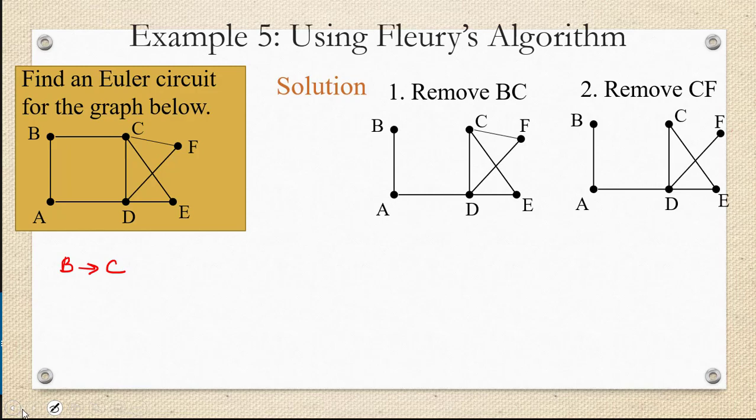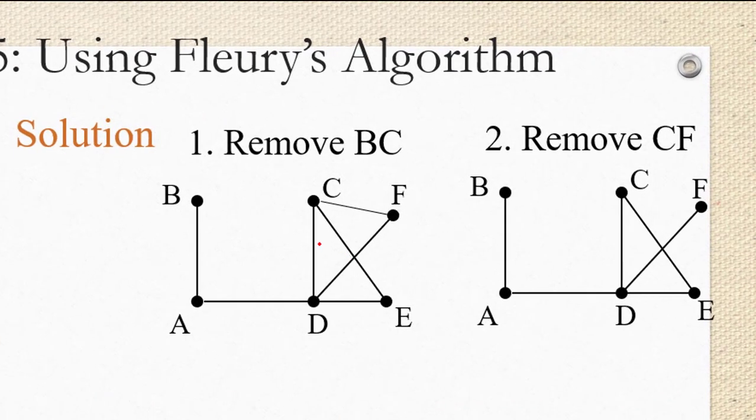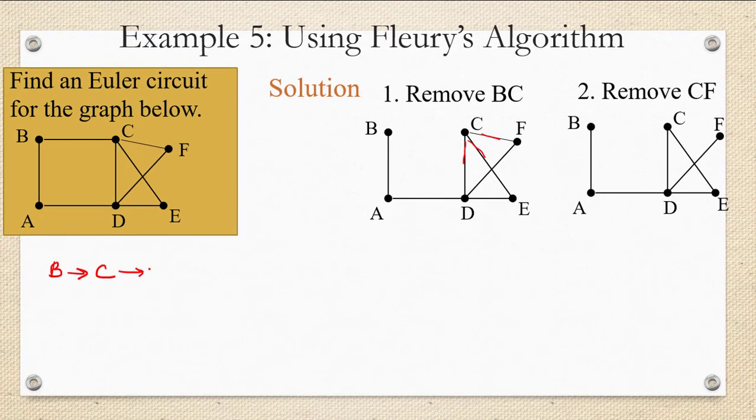Once you get to C, you have an option of removing C to D, C to E, or C to F. Since none of these are cut edges, I just went ahead and picked one and I removed C to F. So I'm going to make a note to myself that I went from C to F.